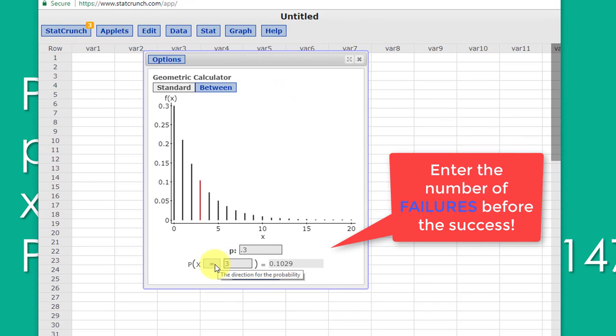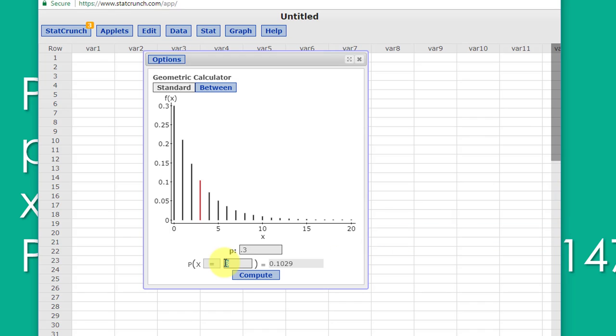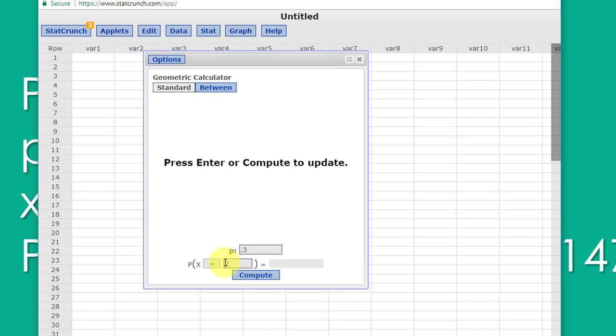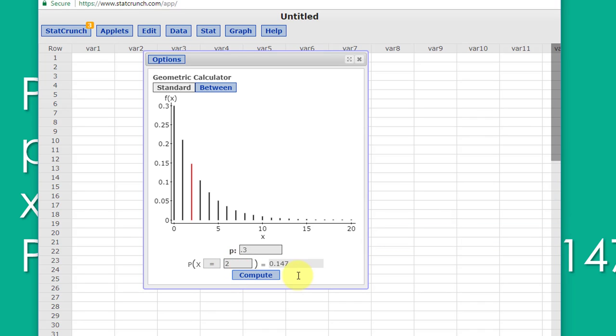You need to enter not the number of the trial with the first success, but the number of failures before you hit success. So if I put p equal 2 in there and hit compute, I get the 0.147 that we're looking for.